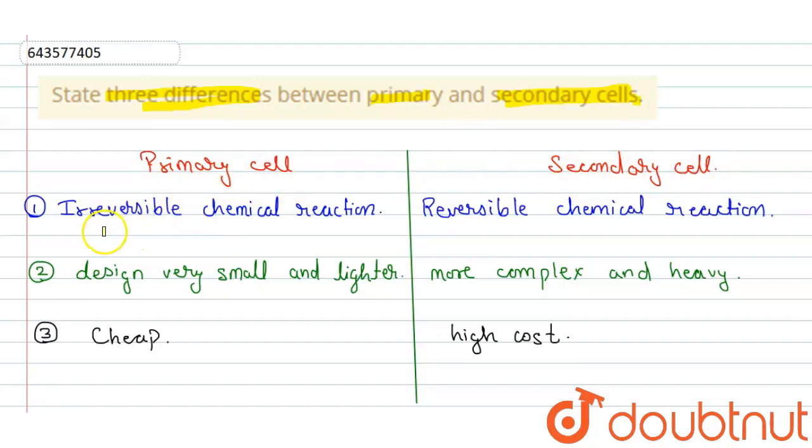First, in the primary cell, the primary cells show irreversible chemical reaction. In primary cell it shows the irreversible chemical reaction, whereas in the secondary cell this shows the reversible chemical reaction.